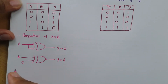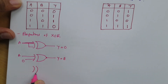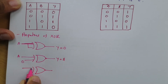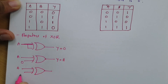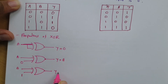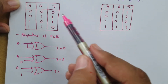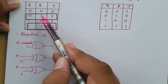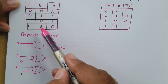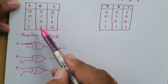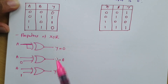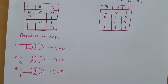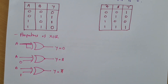Third property of XOR gate: if one terminal is A and the second terminal is 1, then when A is 0 the output is 1, and when A is 1 the output is 0 — which means the output is the complement of A. So our output is Ā when the second terminal is 1.